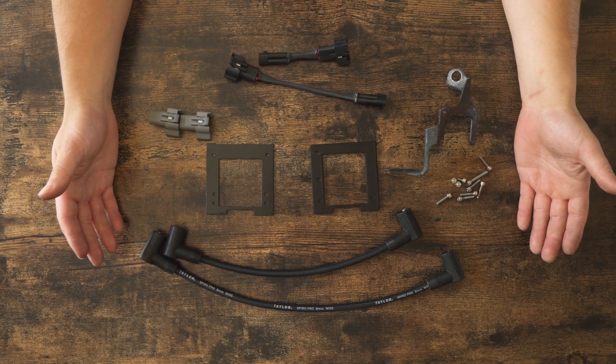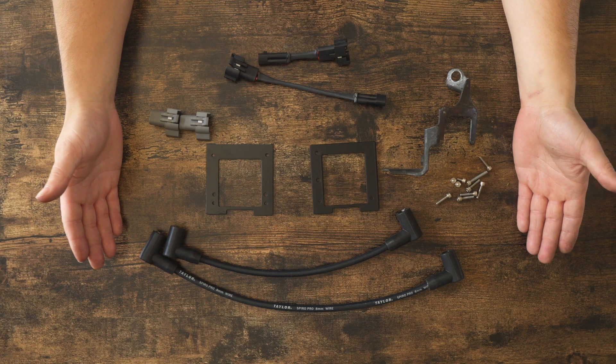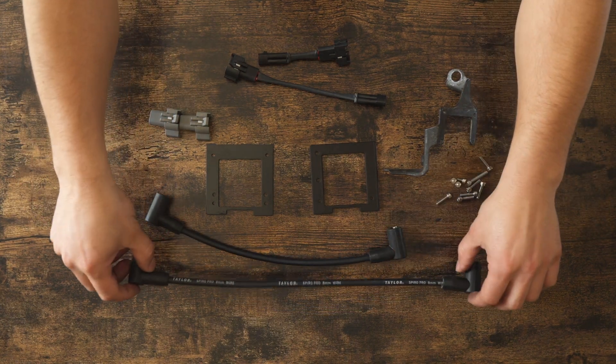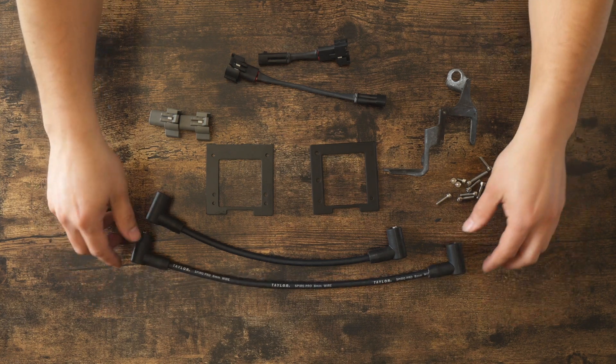Okay, so here I'm going to show you what comes in the second generation MSD kit. We have two spark plug wires, but as you see on this one, one spark plug wire is longer than the other one,